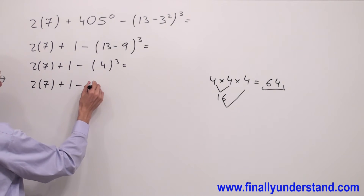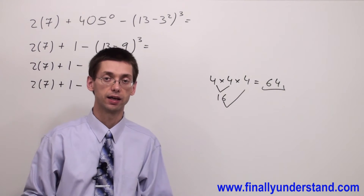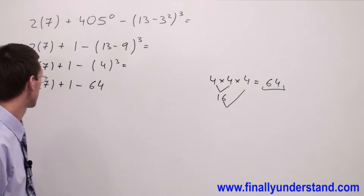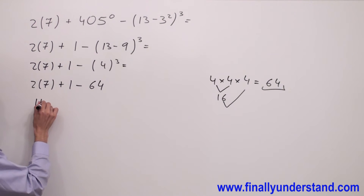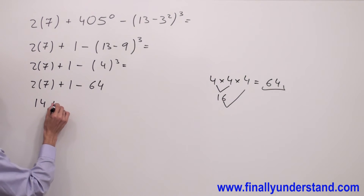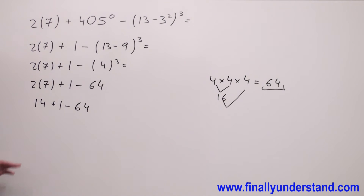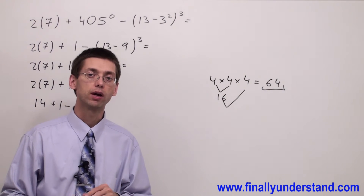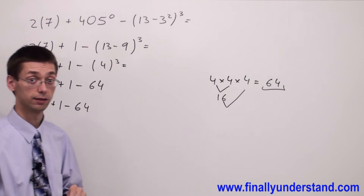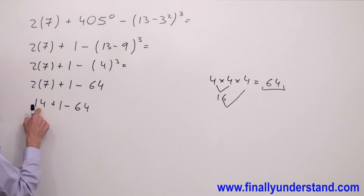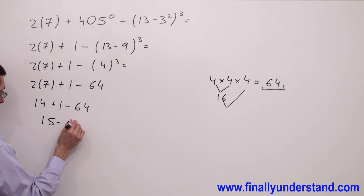So I'm going to have negative 64. I'm finished with the parenthesis. Next I can perform multiplication: 2 times 7 is equal to 14. I have 14 plus 1 minus 64. Because addition and subtraction are equally important, I'm supposed to perform the operations from left to right. So 14 plus 1 is equal to 15, minus 64.